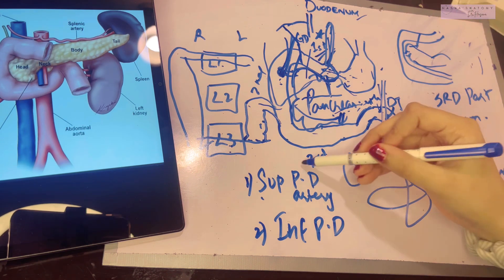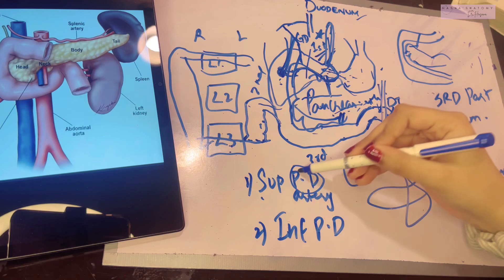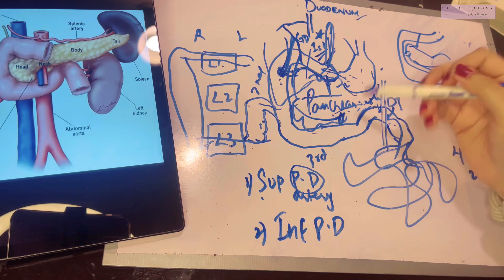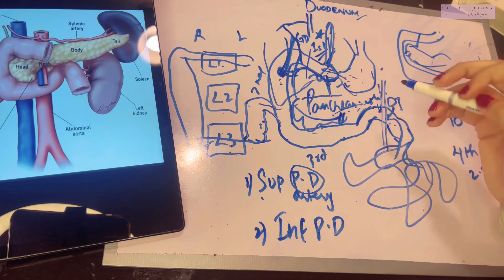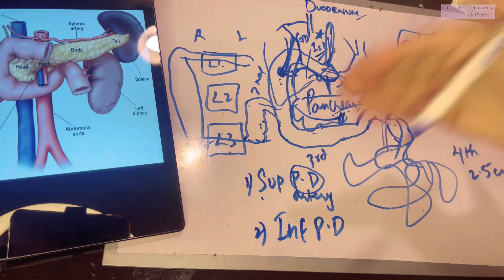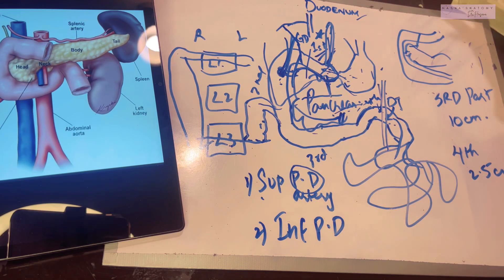Apart from that, the lymphatic drainage is mostly in the pancreaticoduodenal lymph nodes, similar to the name of the artery, and the superior mesenteric lymph nodes. These two lymph nodes eventually drain into the hepatic nodes and end up in the celiac nodes, after which they end up in the cisterna chyli.